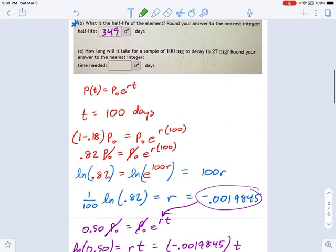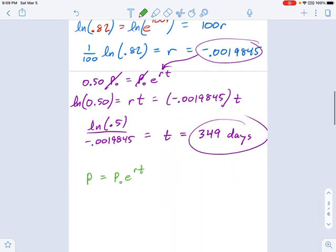And I'm told that I started with 27 mg. I'm sorry, I ended with 27 mg, and I started with 100 mg. And then it's e to the rt. Well, what's r? Same thing it's been. 0.0019845 times t. We're going to end up doing first a division by 100, then a natural log of both sides. It's the same exact procedure that you just did with the half-life. But now we're calculating a different life. This is the amount of time it takes to get to 27% instead of 50%.